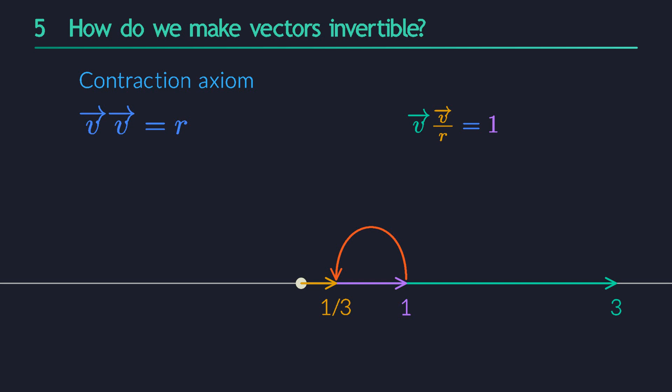So you basically obtain the inverse of any vector or real number by first scaling it down by its own length, which turns it into a unit vector, and then scaling down by that same length a second time to get the final result. This means that the number r is really the squared length of the vector. So you will often see the contraction axiom written like this. Each vector must square to the square of its own length.